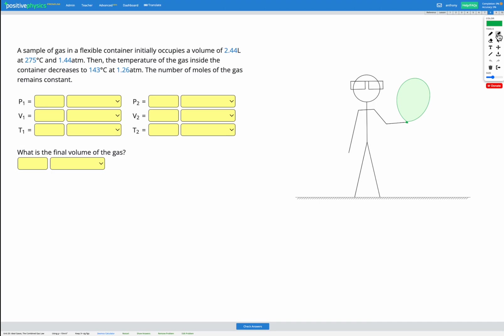In this question, we have a sample of gas in a flexible container. It initially occupies a volume of 2.44 liters at a temperature of 275 degrees C and a pressure of 1.44 atm.